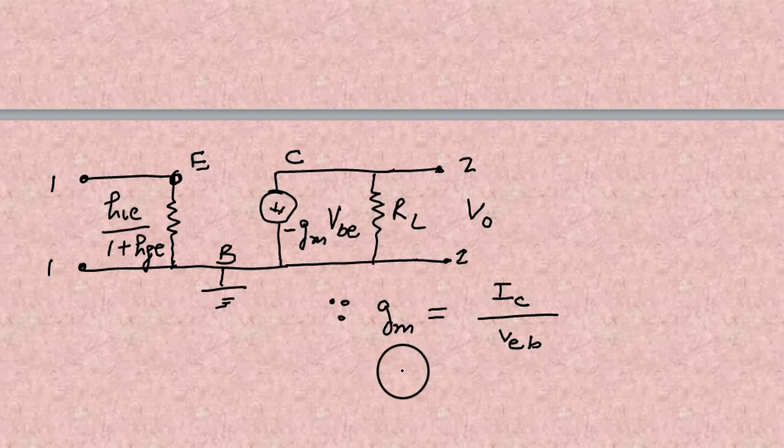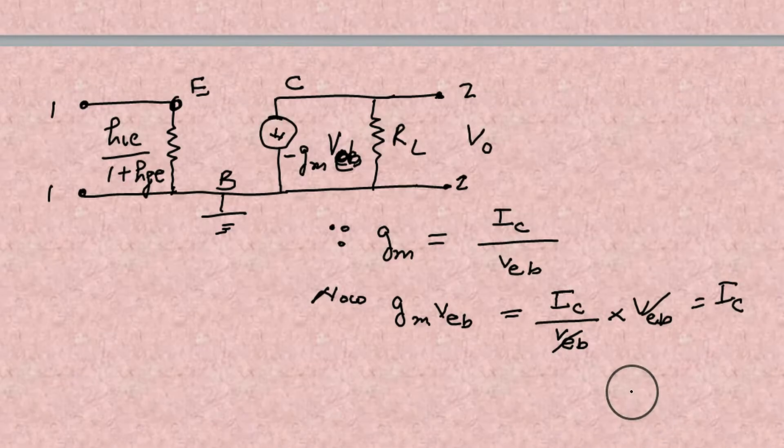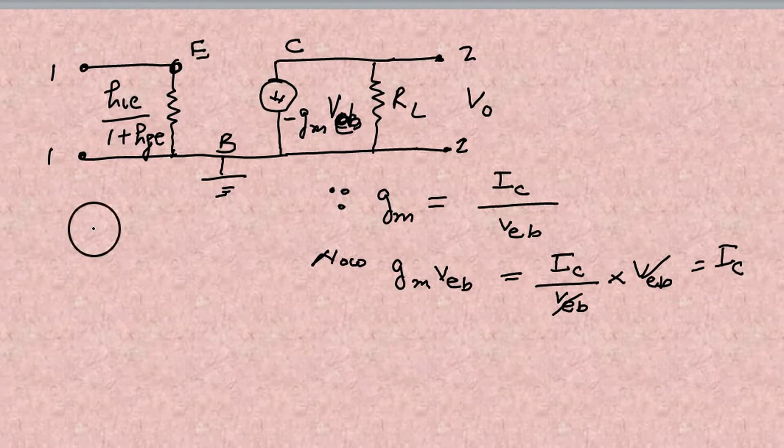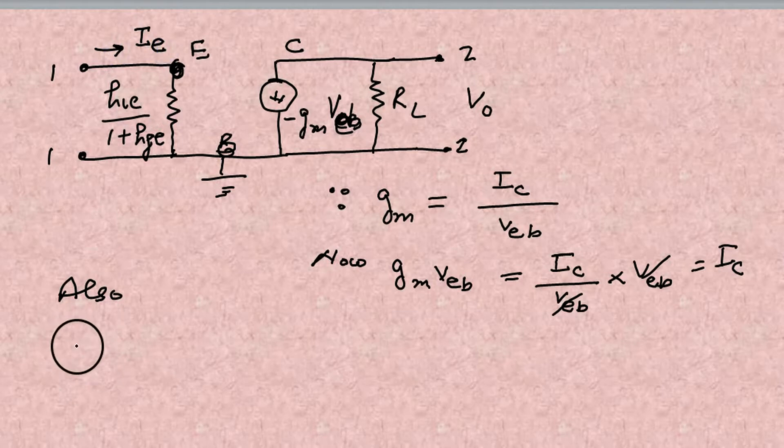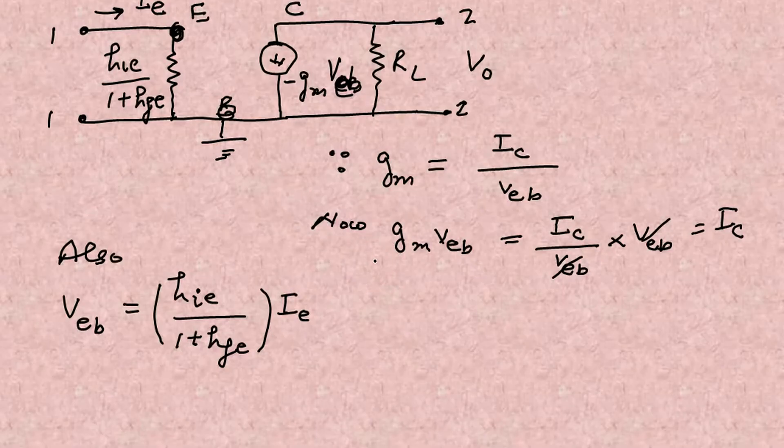GM into VEB. Because GM is what? Mutual conductance or transfer conductance. It is IC over VEB. VEB is also IC, but there's a negative sign to remember. There's a reason for the negative sign. You will follow it after the completion.